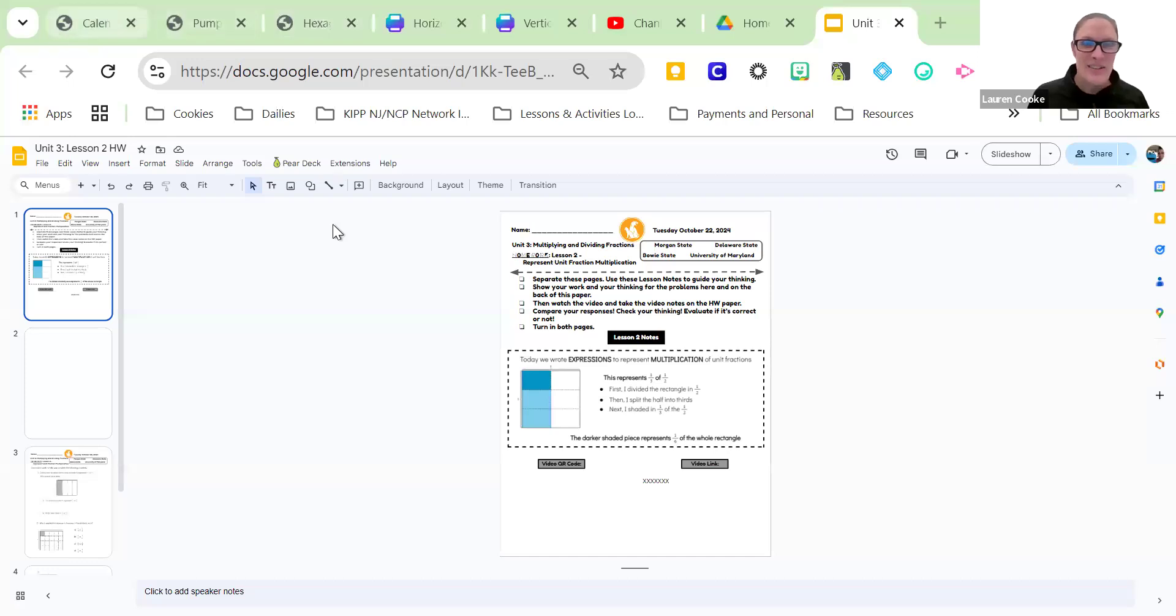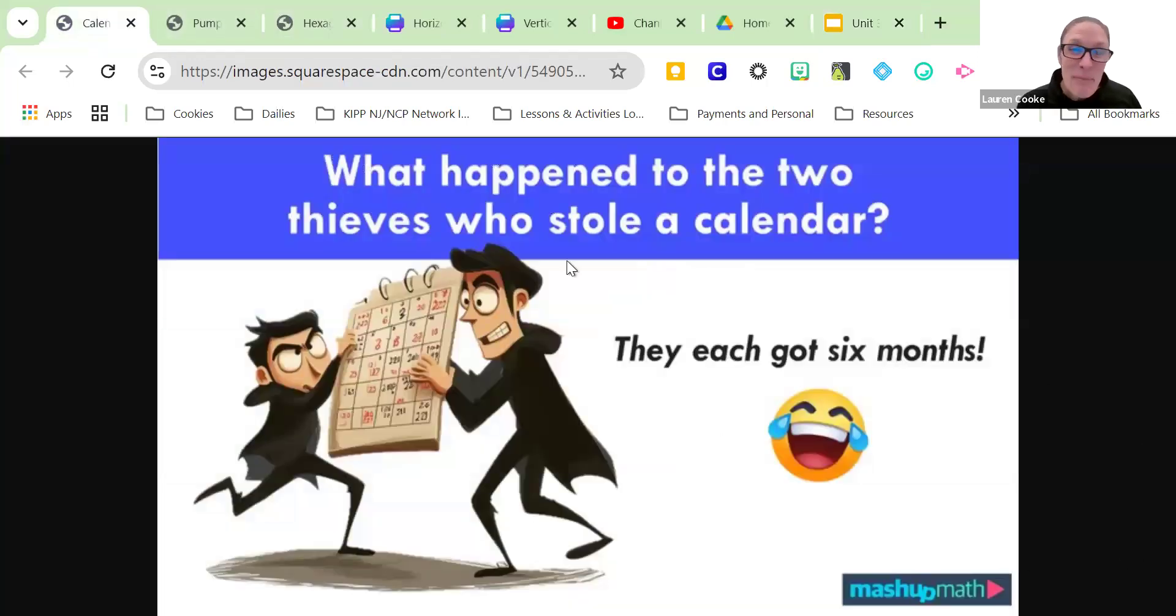Hello, good afternoon students, happy to see you here mathematicians. Let's see what joke we have in store for now. Okay, what do we think about this joke? What happened to the two thieves who stole a calendar? They each got six months because 12 divided by two.